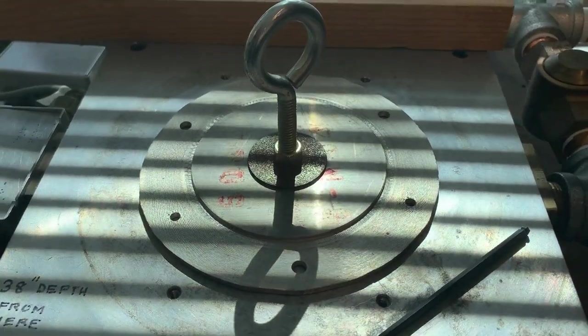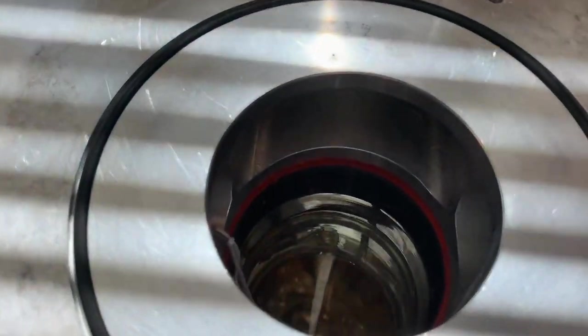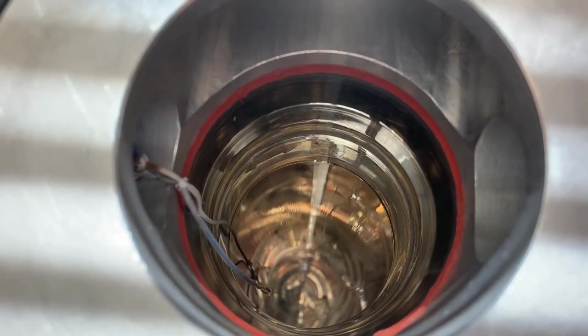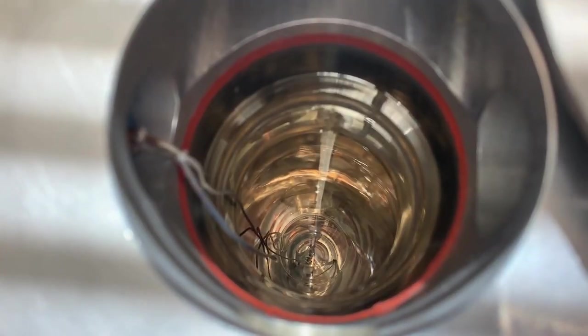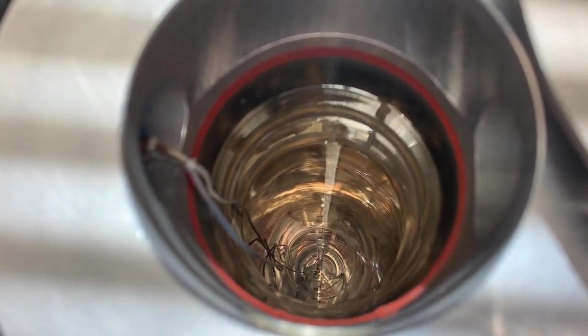The top of the dewar here where we put the cryostat looks like this. There's a cover over it to keep dust from falling in it. But if we look inside, you can see all the way down there. And at the bottom, there's a thermometer built into the bottom of the dewar that will tell us the bath temperature.